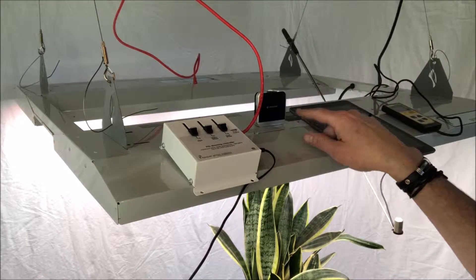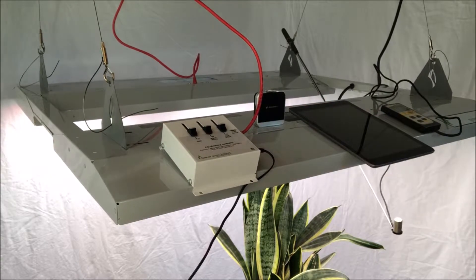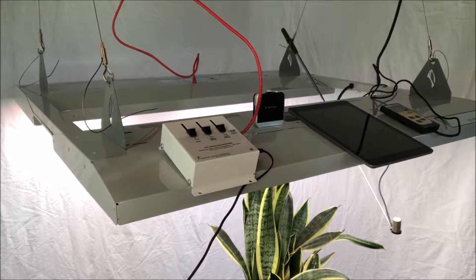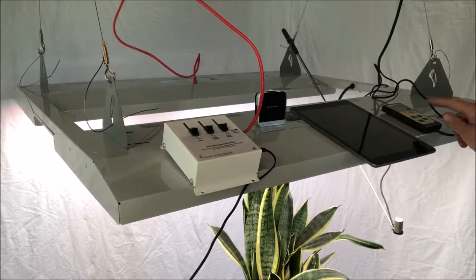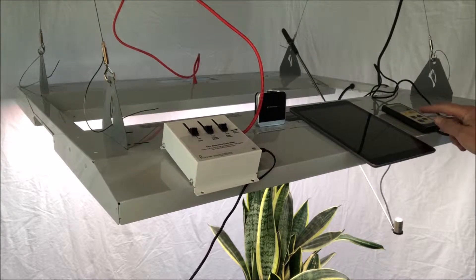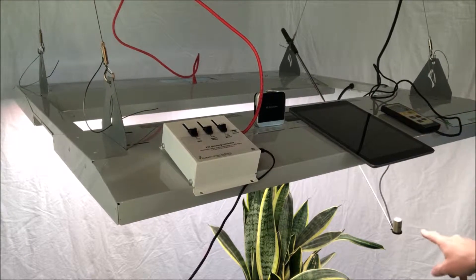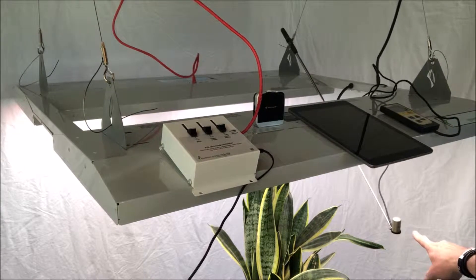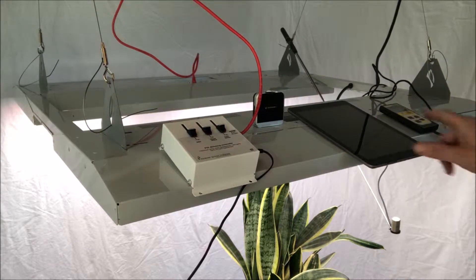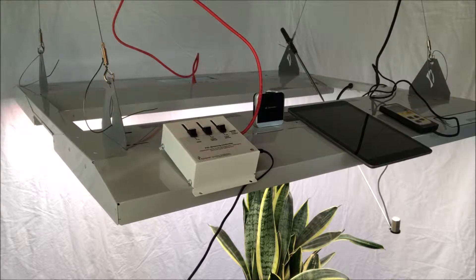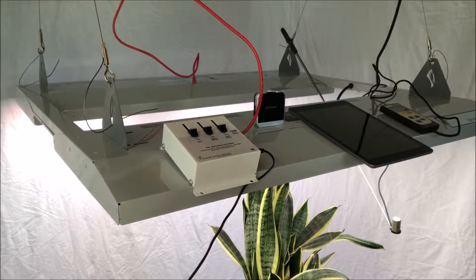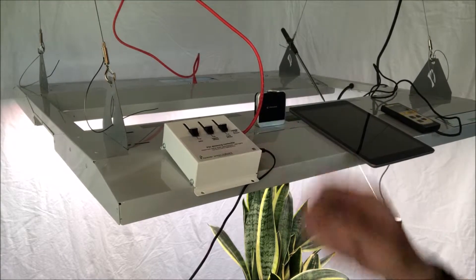And then we also have an Ascensetech Passport Pro, which we'll be using to take spectrum readings with various controller settings set up. And over here I have an Apogee MQ500 PAR meter, and the PAR sensor is sitting exactly 12 inches below the light. So between these three instruments, we'll have a really clear understanding of what the intensity of the light is and what the spectrum looks like when you use the FGI controller.